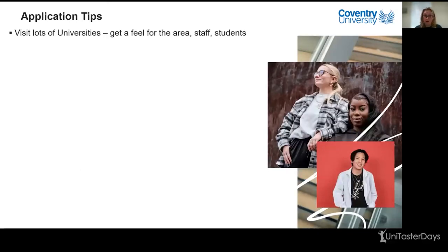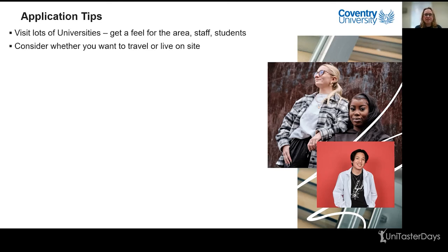If you're looking to apply for a course, here are some of my top tips. I've been there myself many years ago when I was looking for universities while taking my A-levels. Visit lots of universities, get a feel for the area, the staff and the students — it becomes very apparent what type of university you want to be at. Consider whether you want to travel or live on campus, as that will inform your decisions. Ask lots of questions at open days; the staff are there and want to talk to you. Get as much knowledge as possible to help you make your decision.